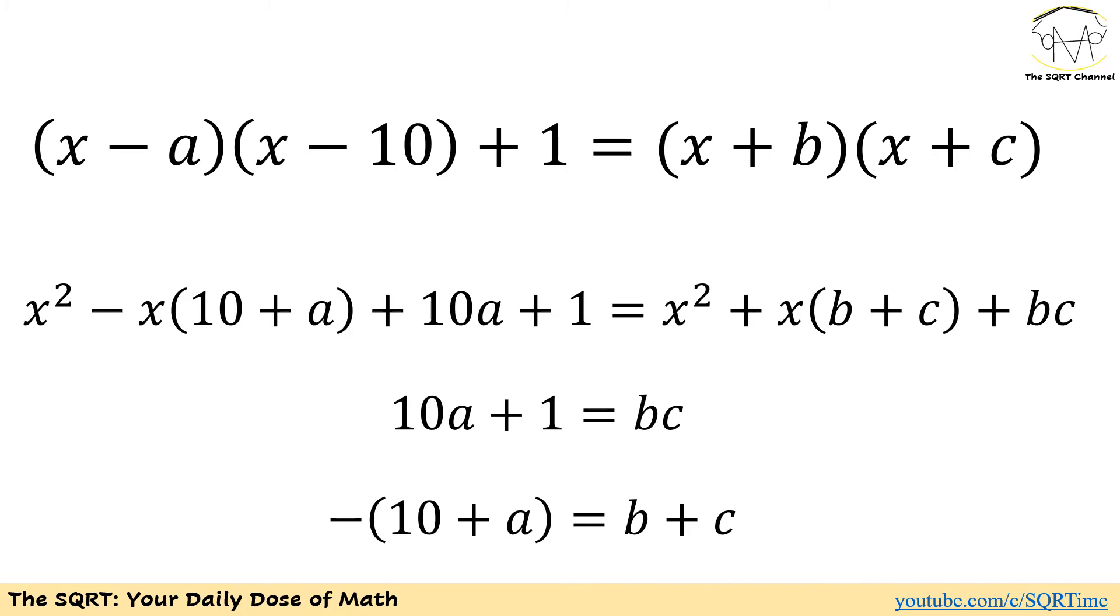The point here is, I wrote the quadratic equation that I have as x², a term multiplied by x and a constant. This is important here. Since the equation is true for all x values, if I use x equals 0, then you can see on the left hand side I have 10a + 1 and on the right hand side I have bc. So they need to be equal and I have 10a + 1 = bc.